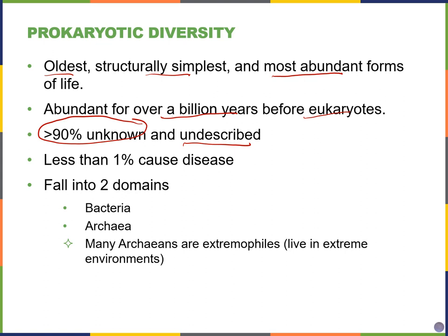Of the ones we do know about, not very many are known to cause disease, although we tend to focus on those because they cause problems in our daily lives. For prokaryotes, there are two domains: bacteria and archaea. Archaea tend to be extremophiles — they tend to live in extreme environments, either extreme temperatures or very salty environments, and we'll look at some examples in the next few slides.